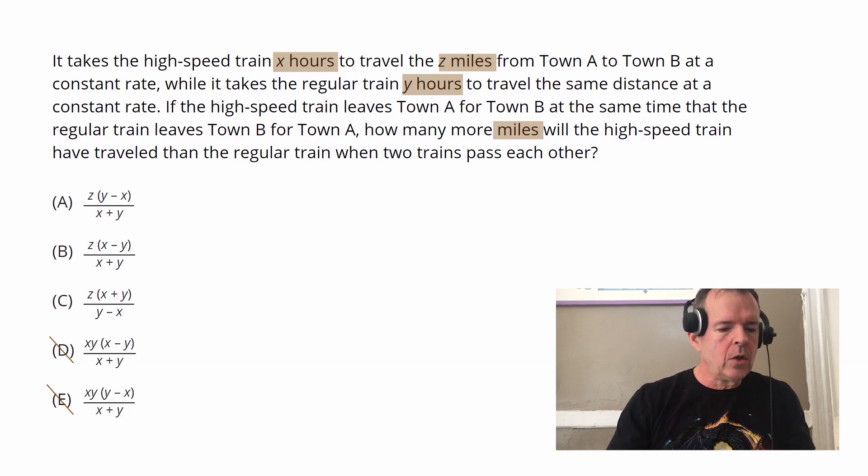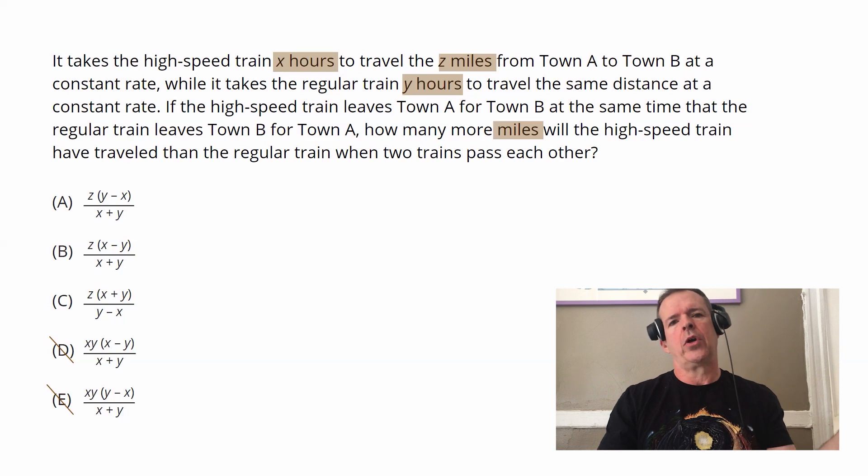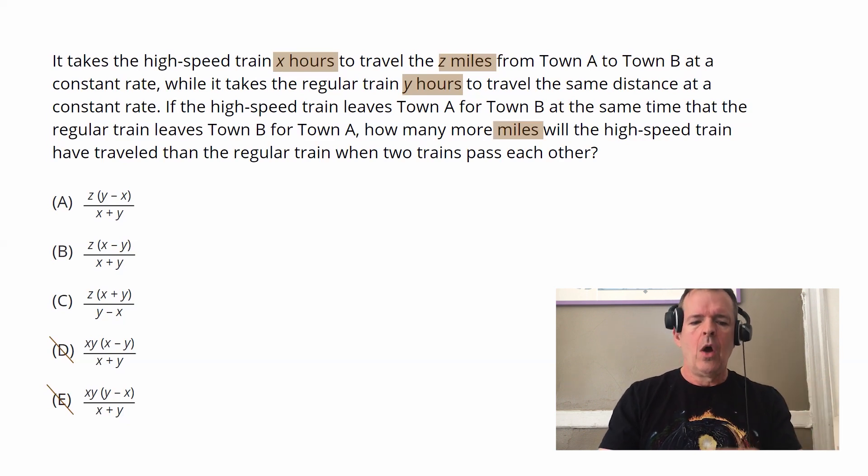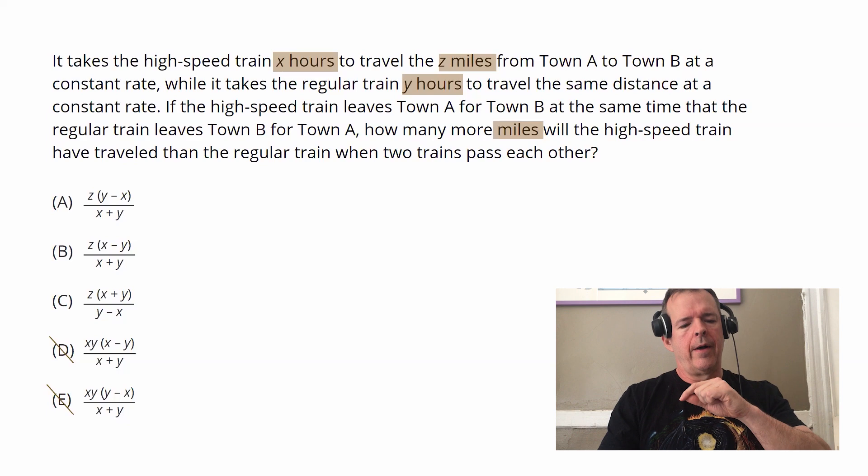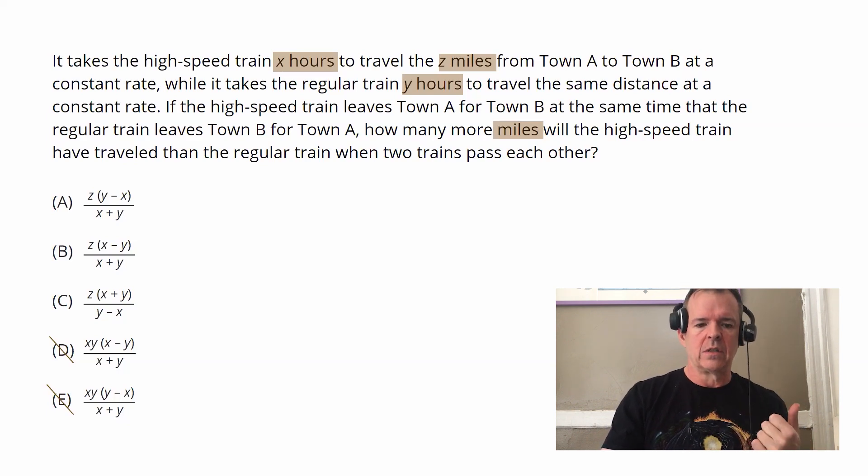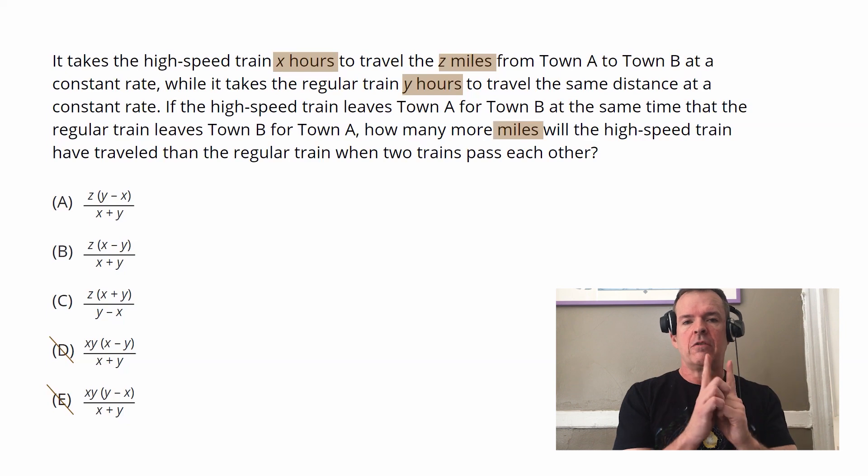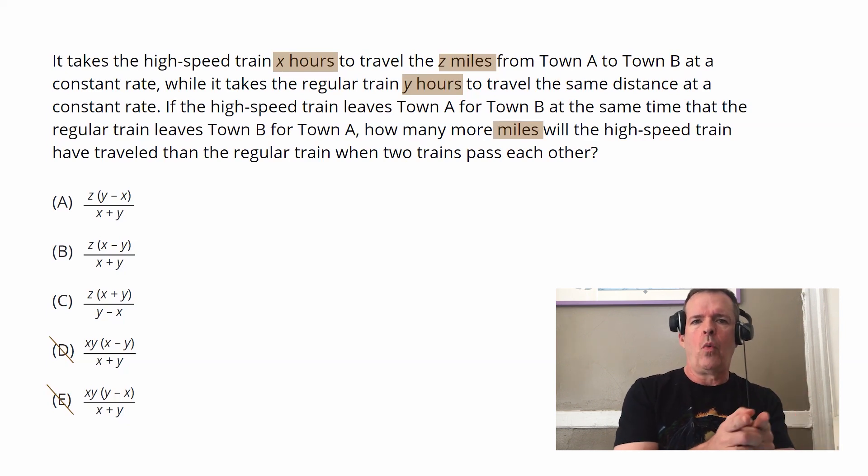As we look, recognize logic-wise what's happening in the question. X is telling us how long it takes the high speed train to go from town A to town B. Y is telling us how long it takes the regular train to travel the same distance. So we know the high speed train by definition is going to be faster, which actually means then its variable X is going to be smaller than Y because its time spent is less.